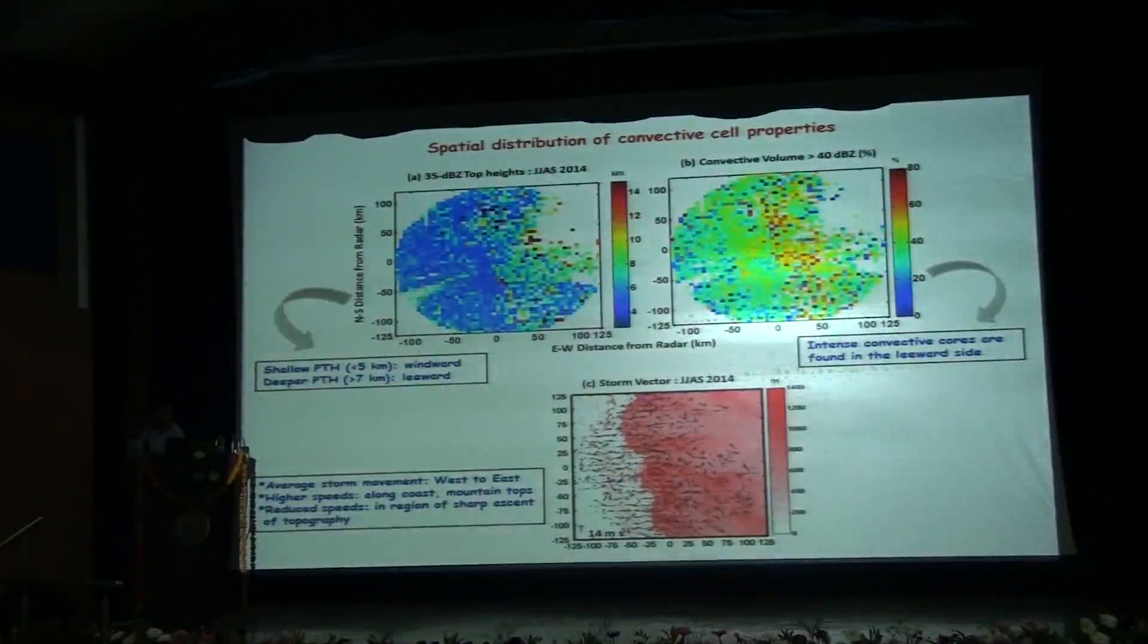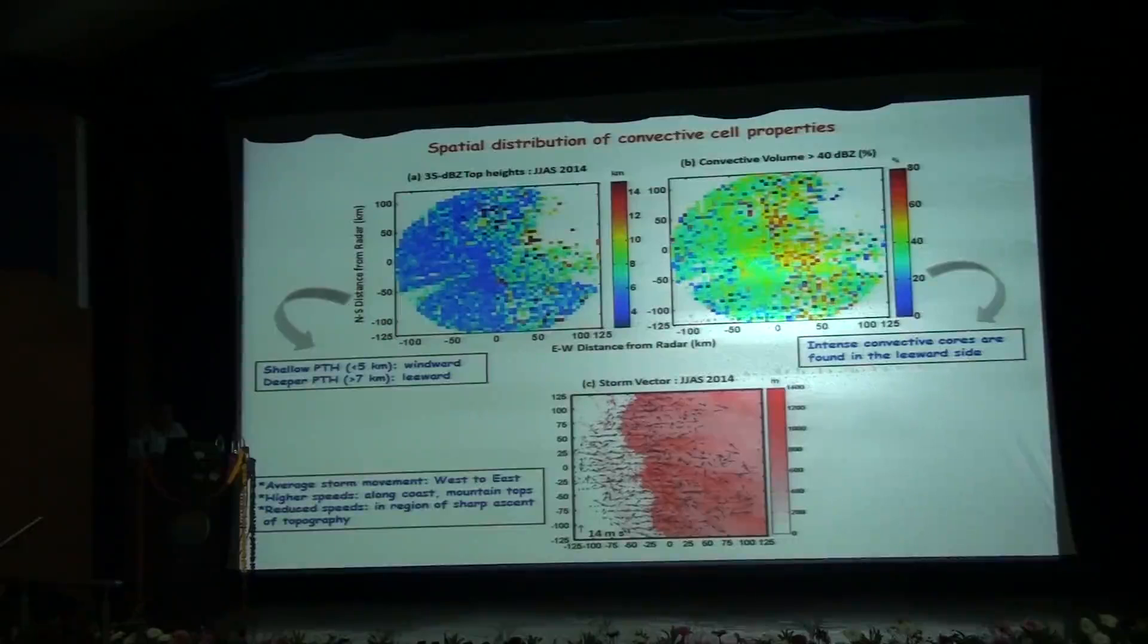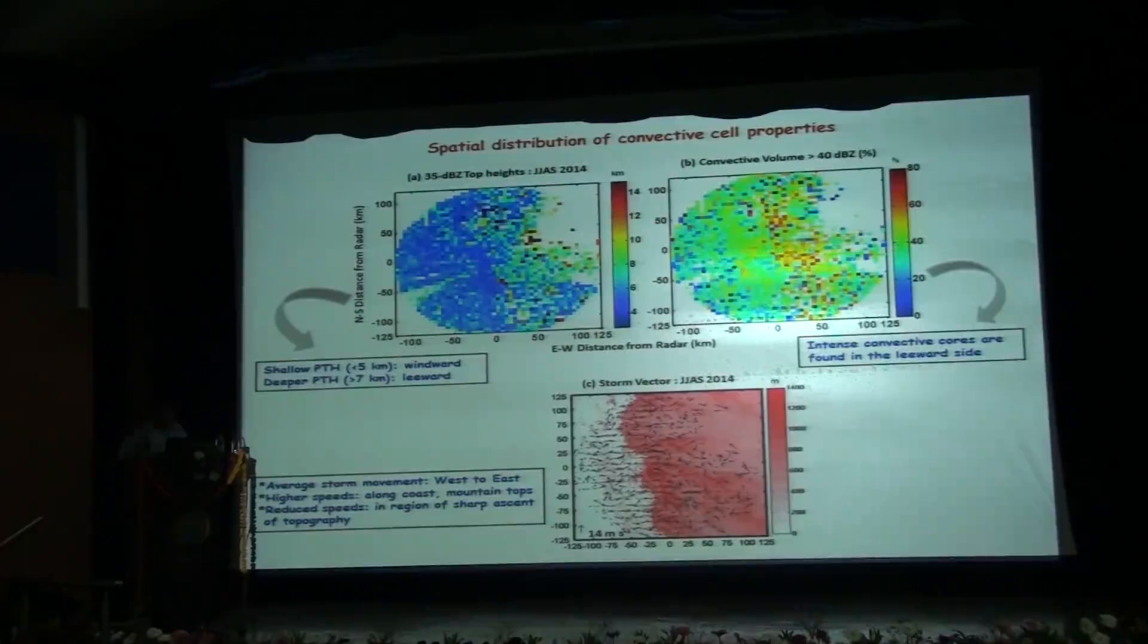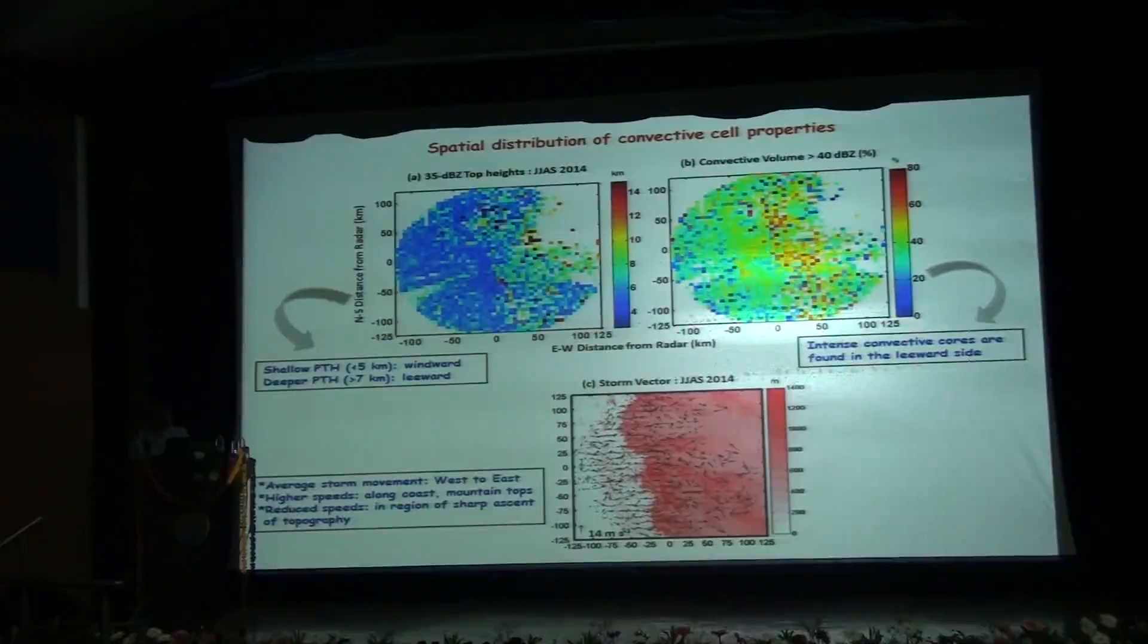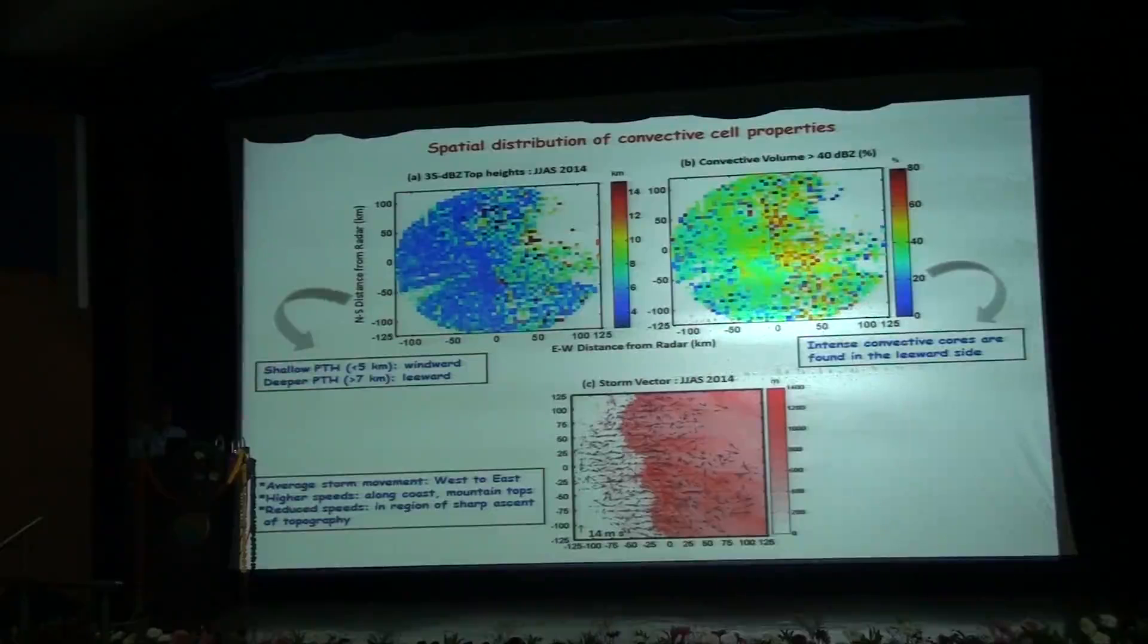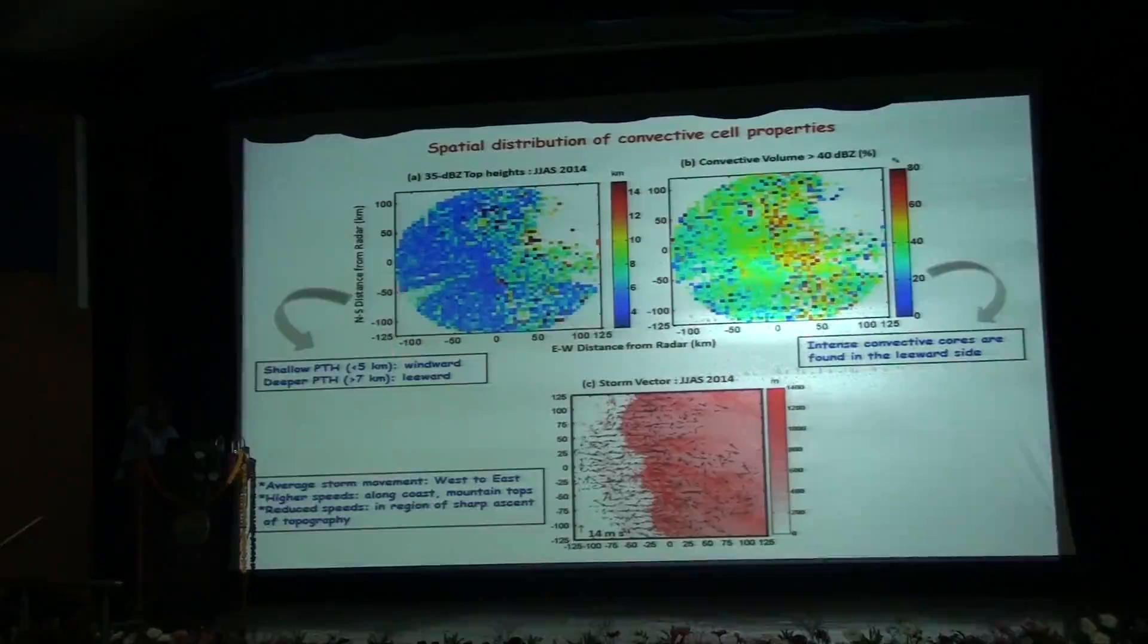We look into the spatial distribution of different convective cell properties like storm top heights, which is the 35 dBZ top heights, the maximum height reached by a 35 dBZ reflectivity echo within a cell. The convective volume which is greater than 40 dBZ indicates the intense convective core within a storm. The storm vector here represents, the length of the vector represents the speed and the arrow represents the direction. The speeds are obtained by the differences between the starting point of the storm and the dissipation phase divided by the time taken for the storm to travel that distance. In the first figure we see shallow precipitating top heights in the windward side around less than 5 or 6 km and deeper precipitating top heights in the leeward side. Also intense convective cores were preferred in the leeward side of the domain. The average storm movement was found during monsoon to be from west to east.